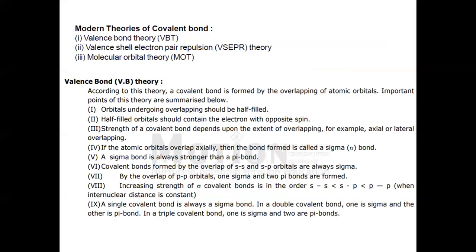Modern theories of the covalent bond: Valence Bond Theory, Valence Shell Electron Pair Repulsion (VSEPR) theory, and Molecular Orbital Theory. We will first consider Valence Bond Theory.